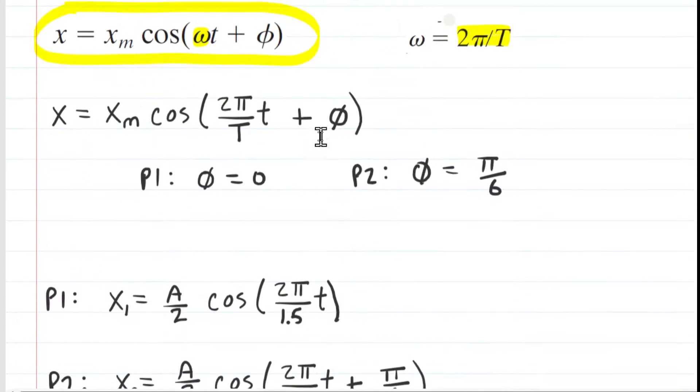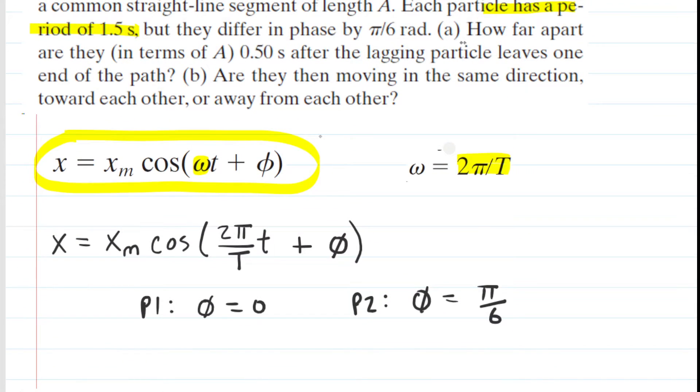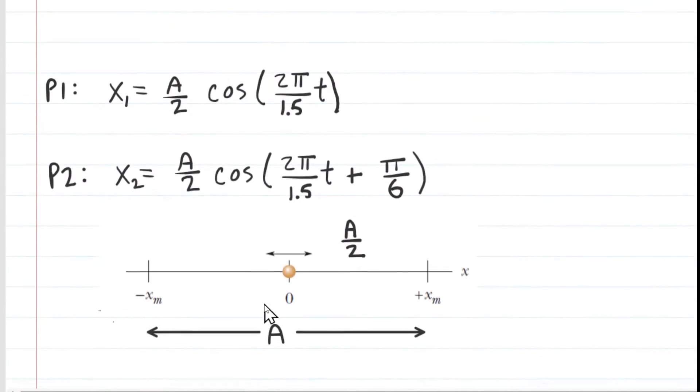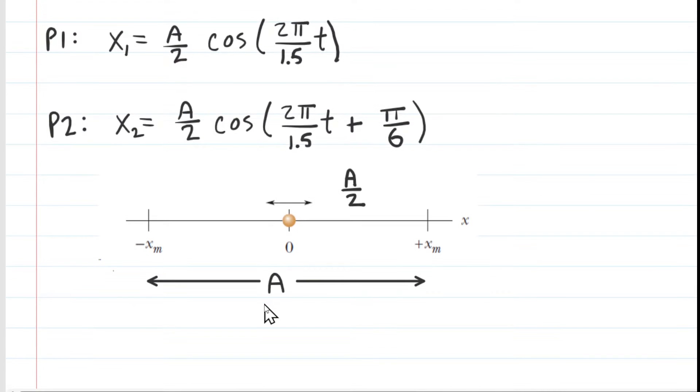Finally, we notice that the question in part A is how far apart are the particles in terms of A half of a second after the lagging particle leaves one end of the path? So this means that lowercase t is going to equal 0.5 seconds. We're going to go to our equations and substitute in 0.5 seconds for the value of lowercase t.